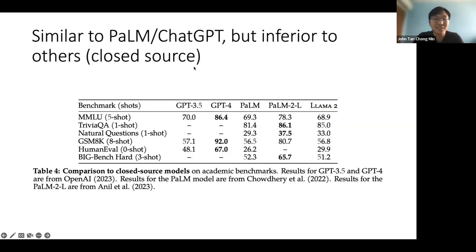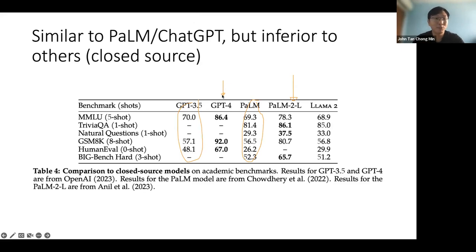LLaMA 2 is comparable to PaLM and ChatGPT in terms of scores, but loses to GPT-4 by quite a huge margin. So in terms of closed source models, if you're looking for the most competent model, GPT-4 is still the best.